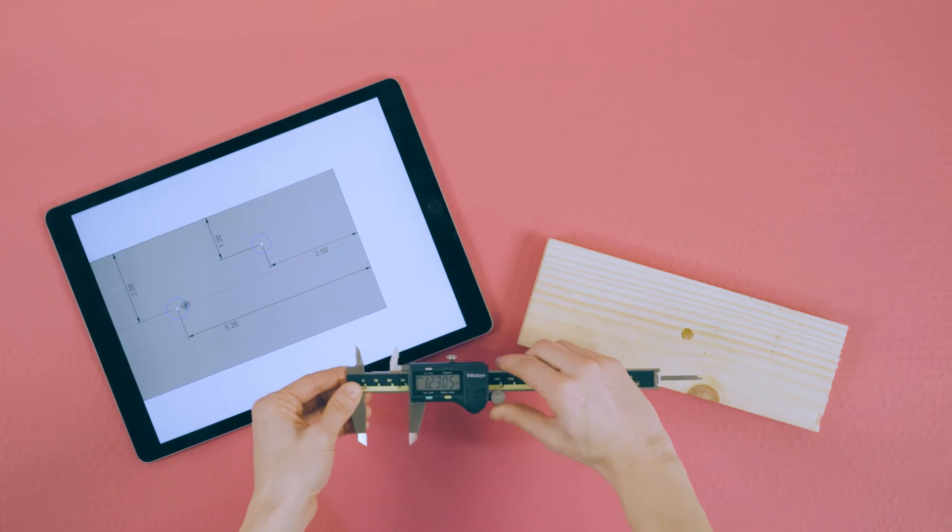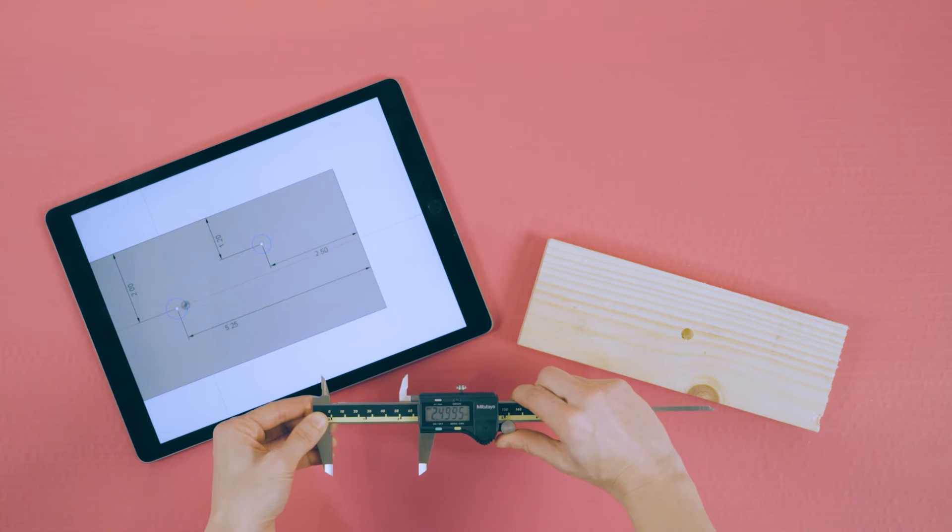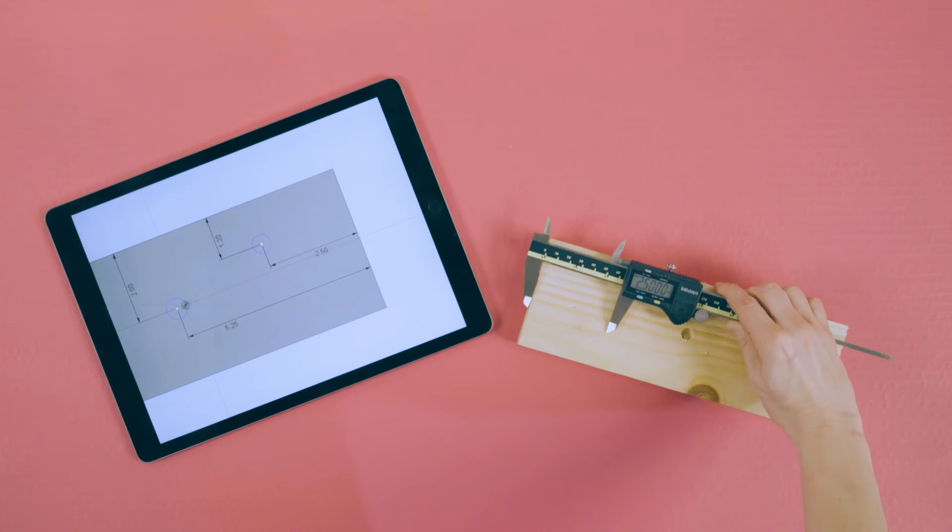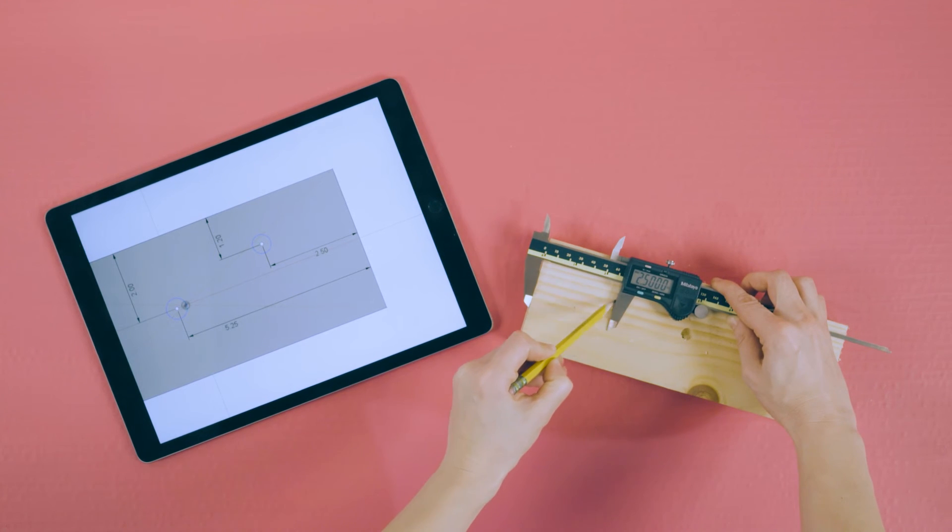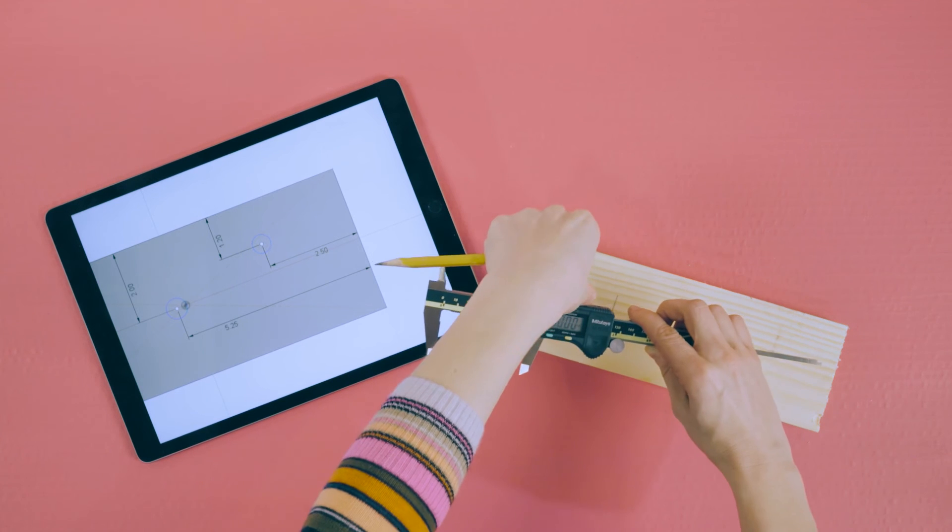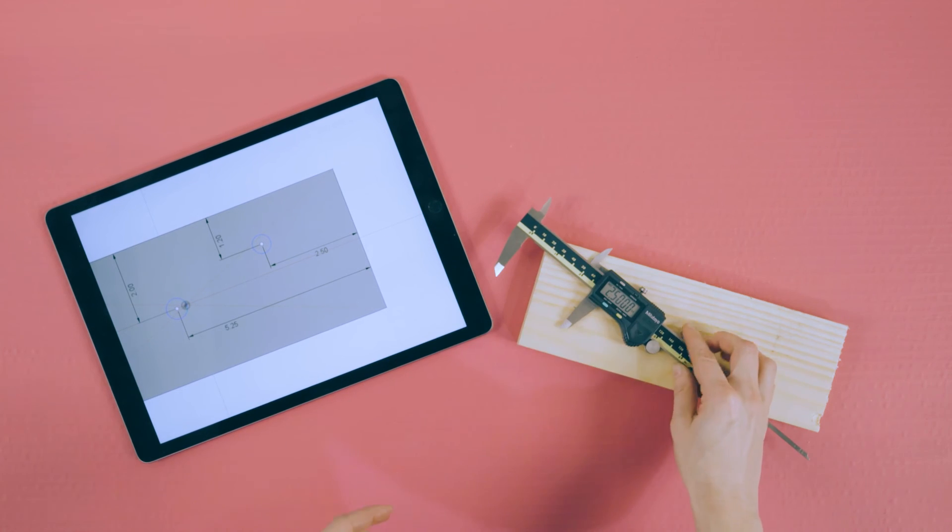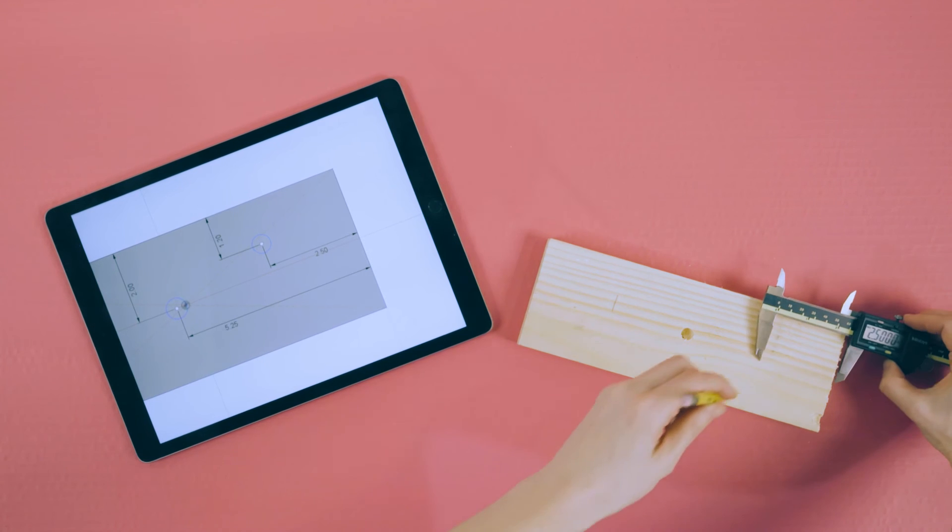This thumb roller allows you to move the jaws slowly as you fine-tune a measurement. Finally, the knob on top allows you to lock the measurement in place so you can transfer it somewhere else or save it for later.